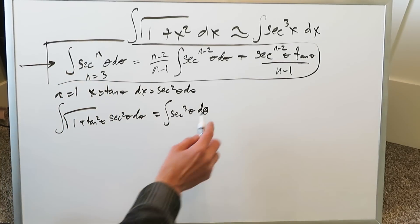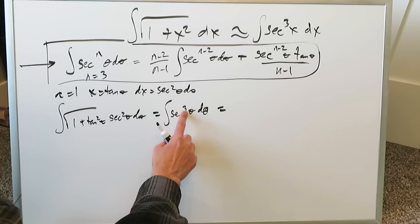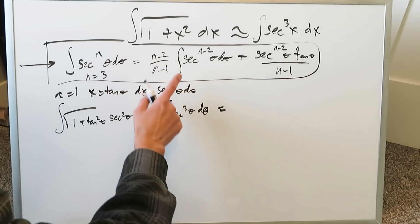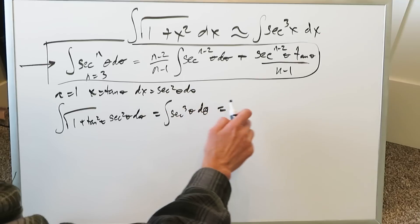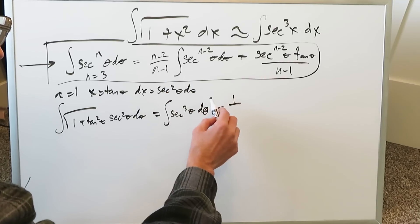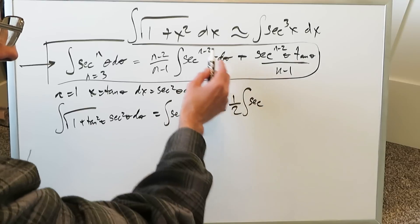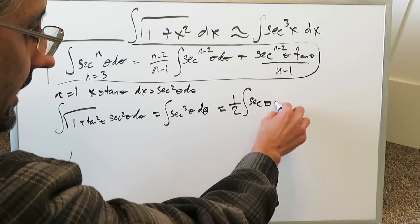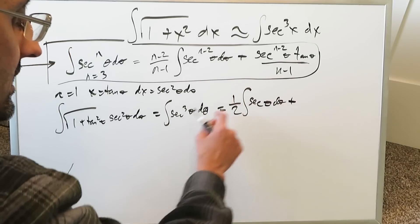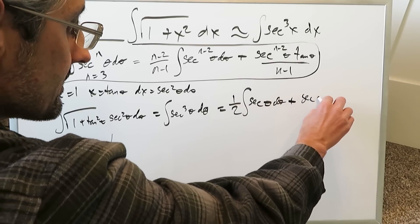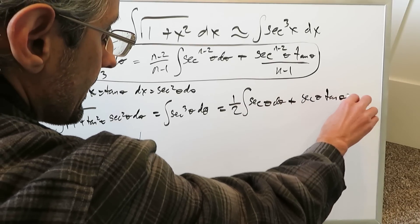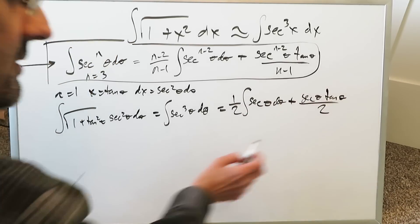When you apply the reduction formula it's not hard. Here your n value is 3 and you just apply it. You have 3 minus 2 divided by 3 minus 1. 3 minus 2 is 1. 3 minus 1 is 2 and then you have integral of secant 3 minus 2, which is 1, theta d theta plus...